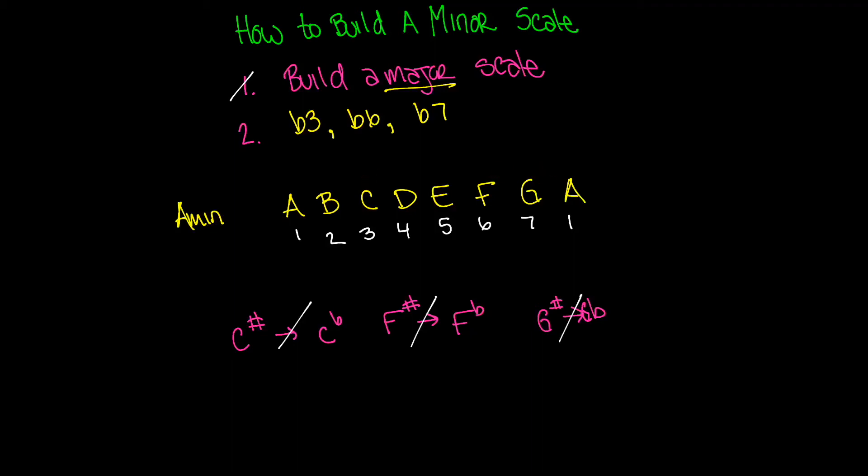You sharped C, F, and G, and then you unsharped them, and you flatted them, and you took everything away, and you're right back where you started. Yes, that is true. However, that is not always the case. This is sort of a special case. A minor is sort of a special case where that happens. So you absolutely need to go through the steps.